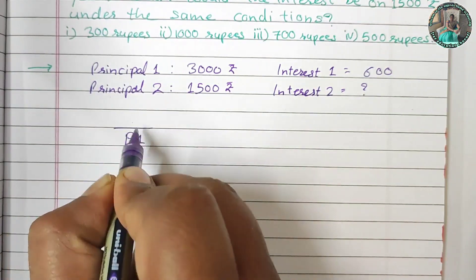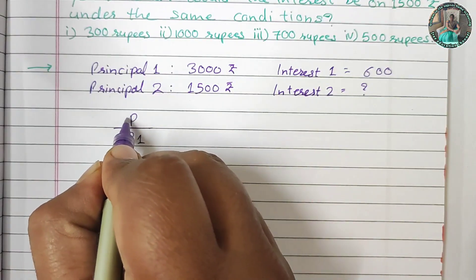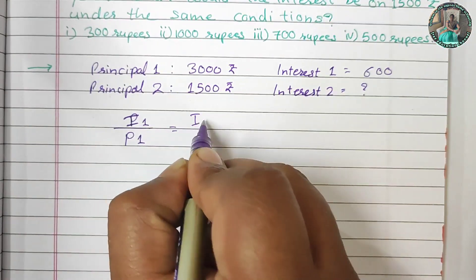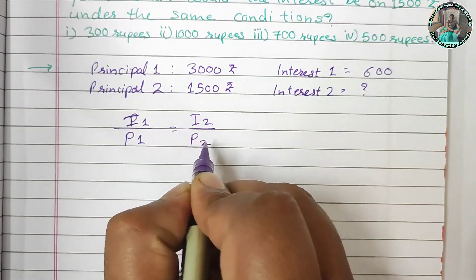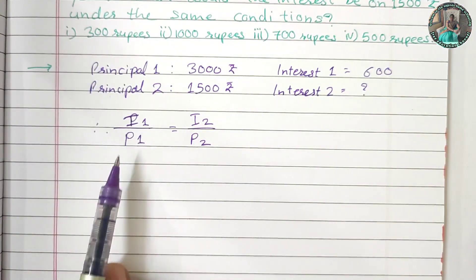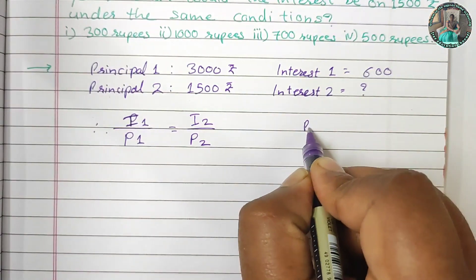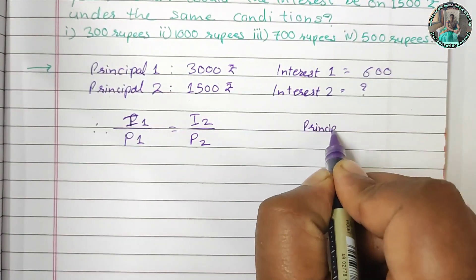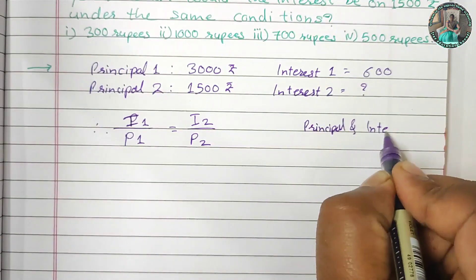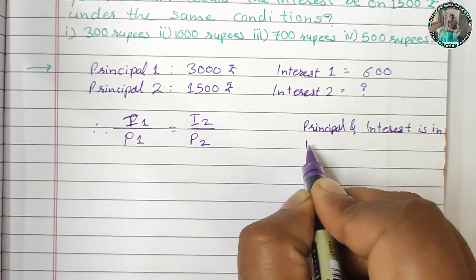The equation is: P1 divided by P2 equals I1 divided by I2.